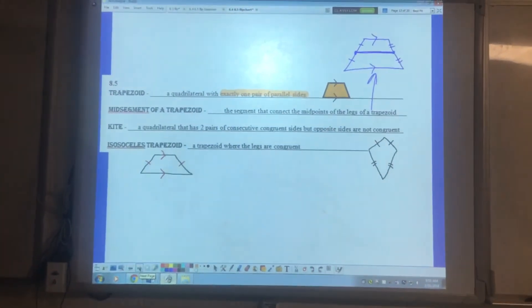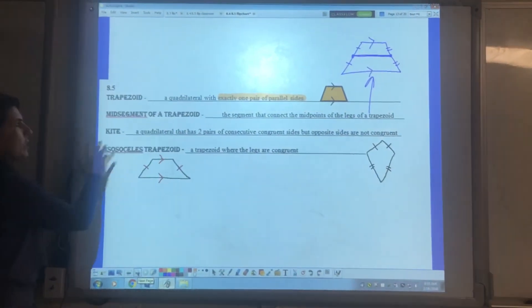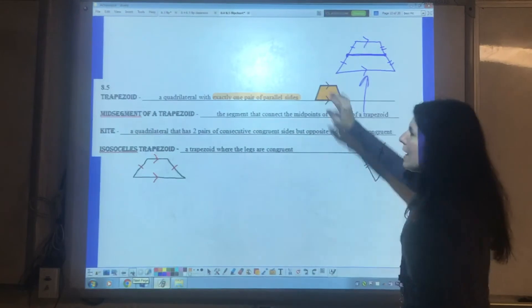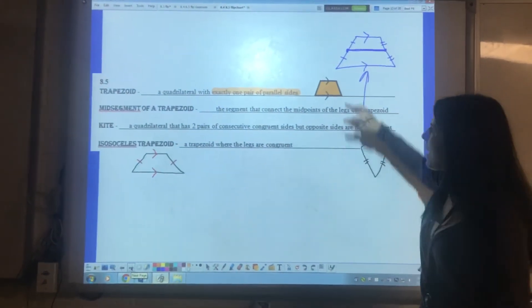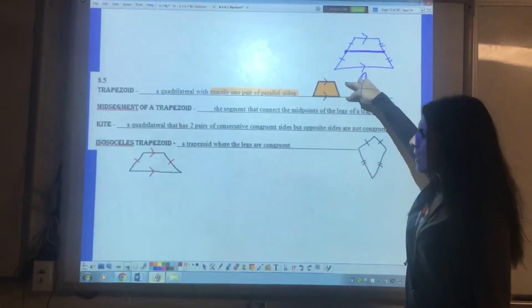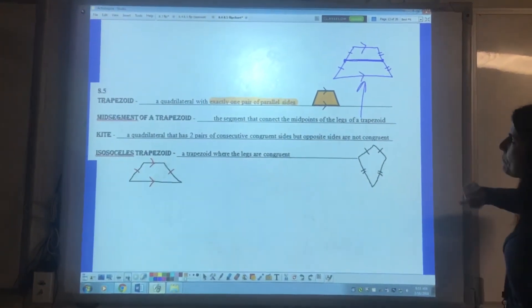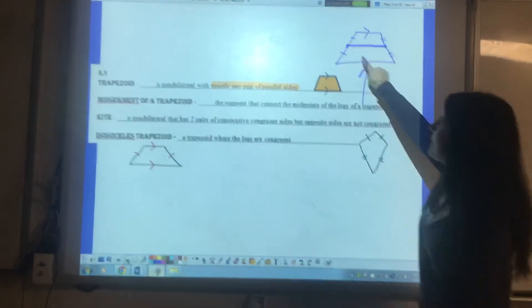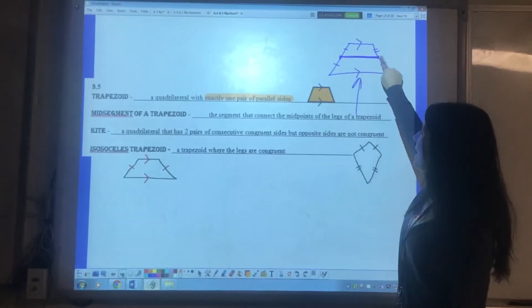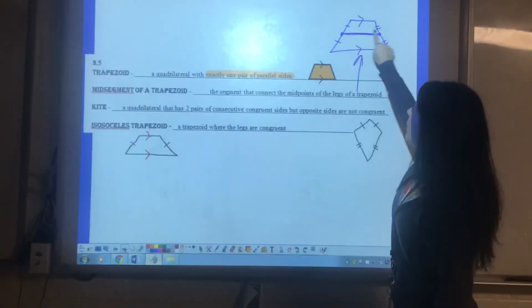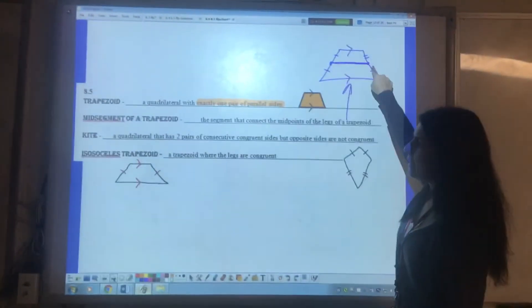8.5 we're talking mainly about trapezoids and kites. These are definitions. A trapezoid, this is the general idea of a trapezoid. It has exactly one pair of parallel sides. This is the pair of parallel sides. These are considered legs and we'll talk about that in just a minute. Mid segment of a trapezoid connects the mid points of the two legs. So here's my parallel sides. Here's my legs. Mid point mid point this thicker line is the mid segment.